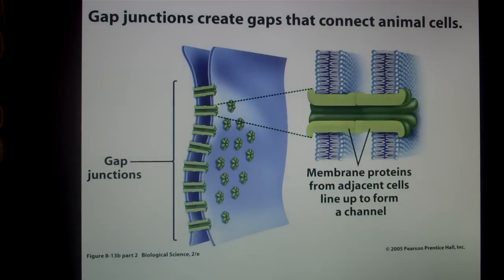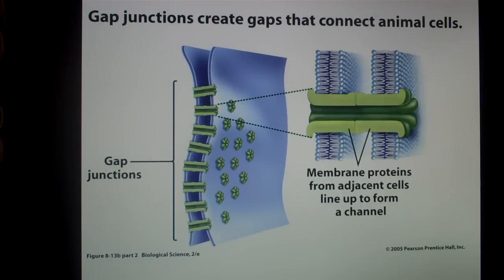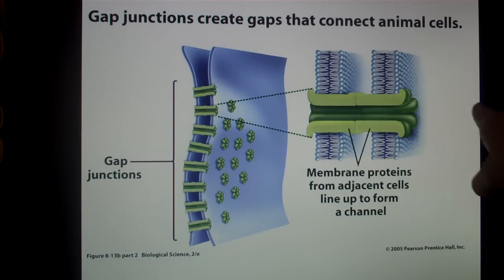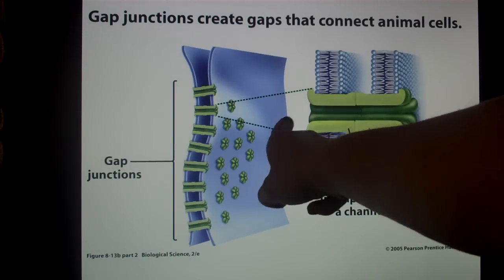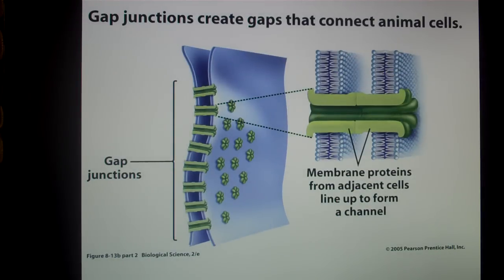Sometimes cells are lucky and they're right next to each other. If two cells are directly next to each other, they can be connected. Animal cells, for example, have gap junctions. Gap junctions are shown in this green channel here, where signaling molecules or chemical messengers can travel directly back and forth between the two cells' cytosols.